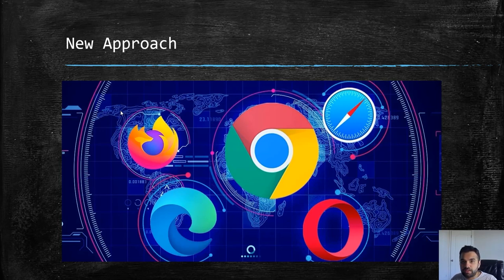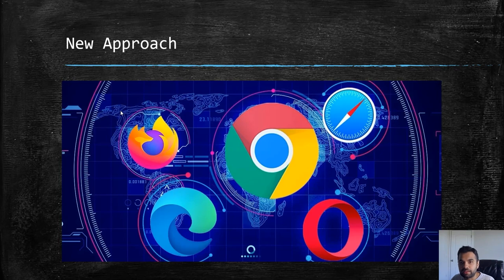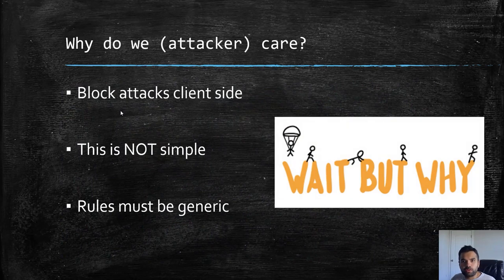Another thing we've seen in previous videos is security headers, which are used by browsers to provide defense-in-depth against certain attacks. This is another reason why client-side filtering and client-side protection is getting more and more relevant.